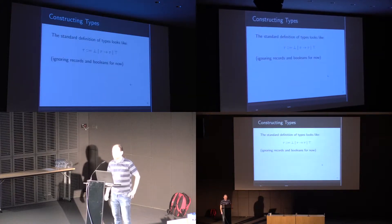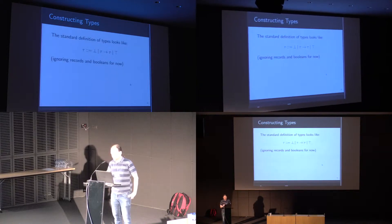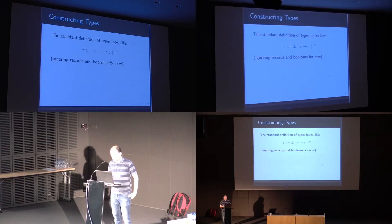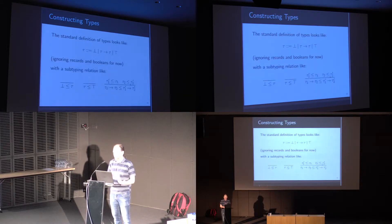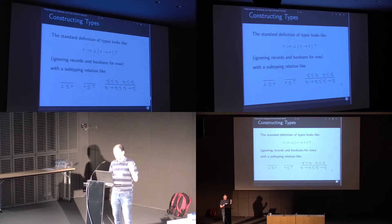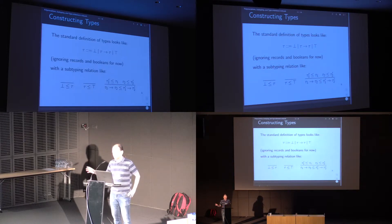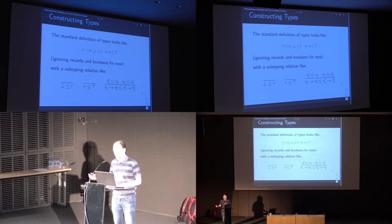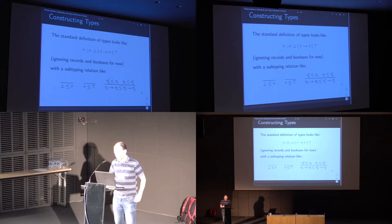Much previous work on subtyping starts off by defining something along these lines. We start off with the ground types, so here I've just added top-bottom types and function types, ignoring records and booleans. But we start off with ground types with no type variables in them, and then we define their subtyping order. We say that bottom is the smallest and top is the biggest, and this slightly complicated looking rule is just the normal contravariance for functions. That is, we are making a stronger statement about a function if we make a stronger statement about its result and a weaker statement of its domain.